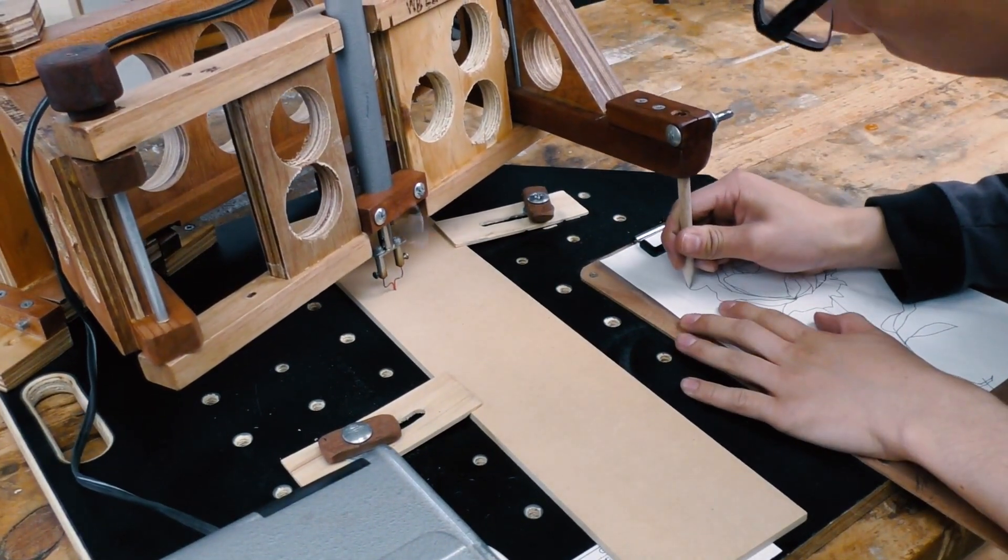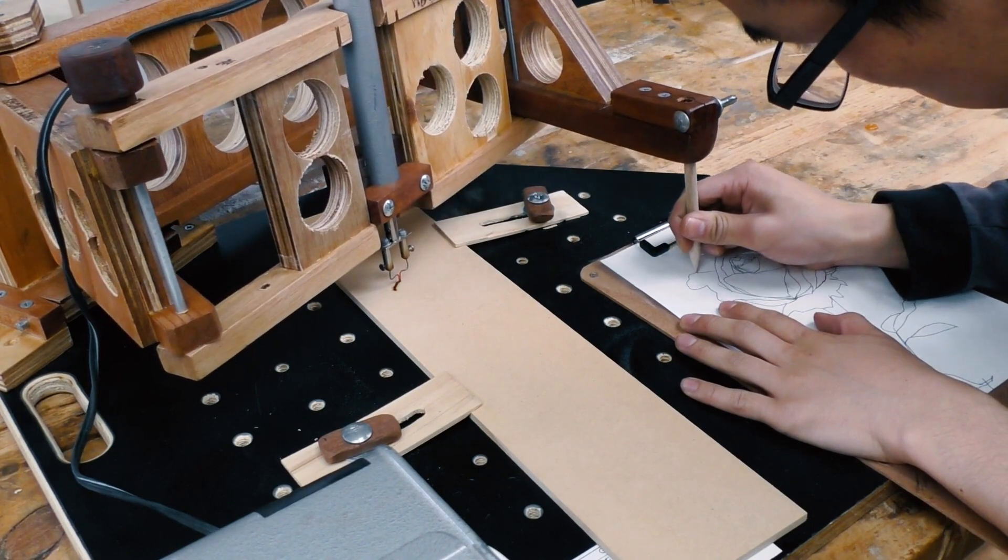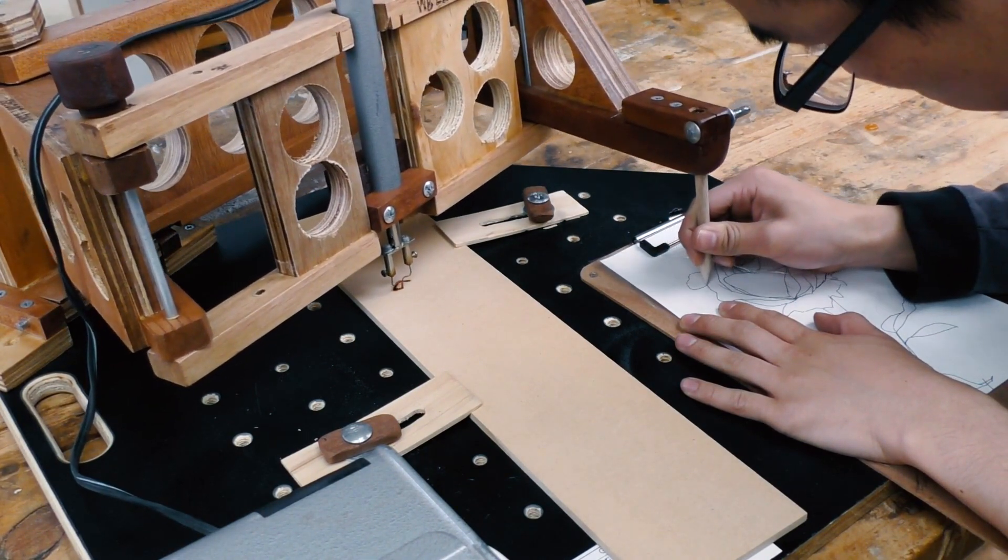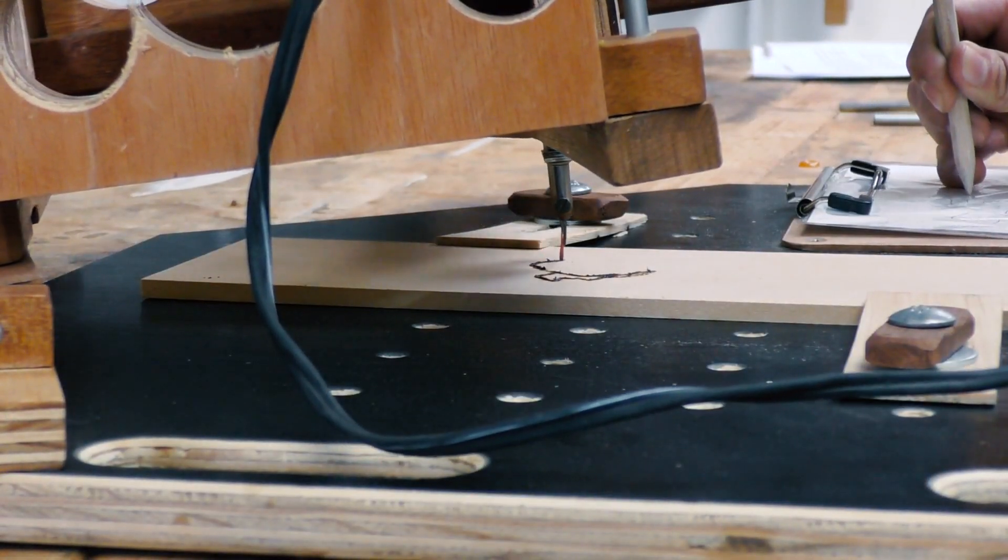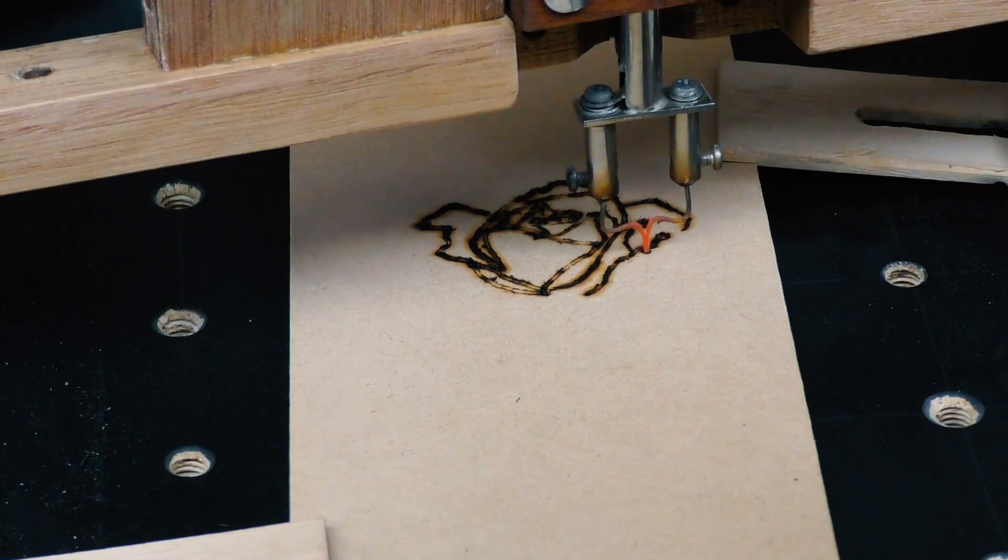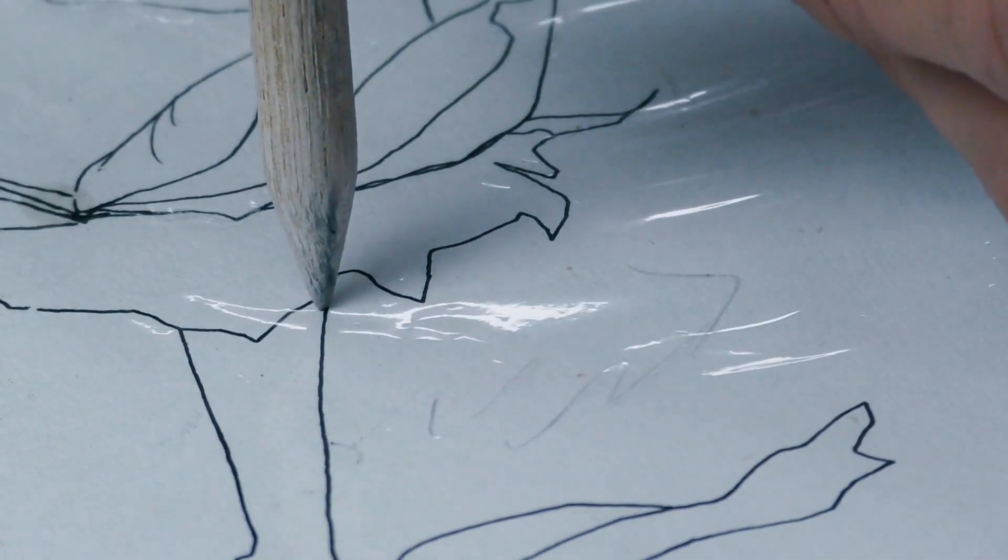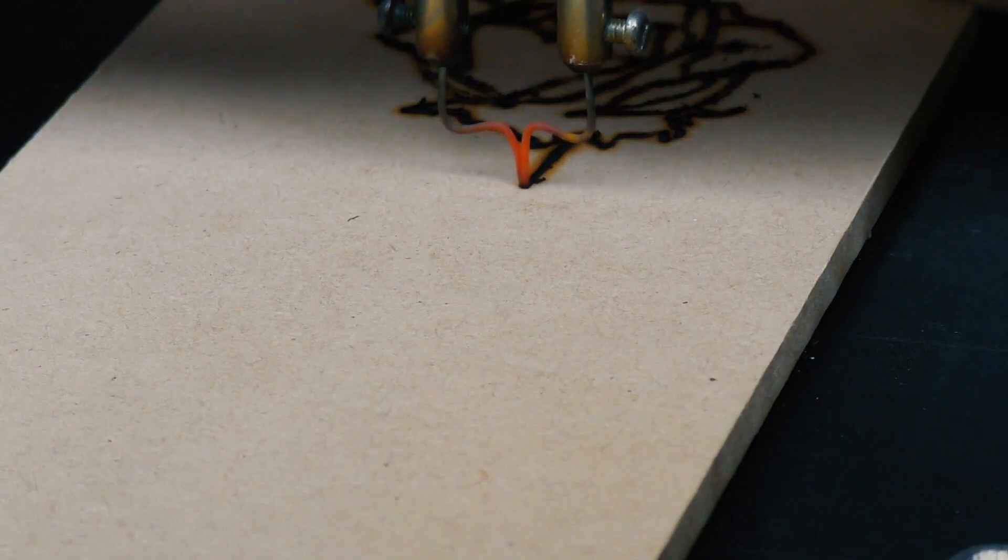The pentagraph essentially produces a copied image of the template using a wood burner at half the size or one third the size. This scaling makes a lot of smaller patterns easier and more accurate to burn. Even without the template, the pentagraph provides a lot of leverage, making fine control extremely easy.